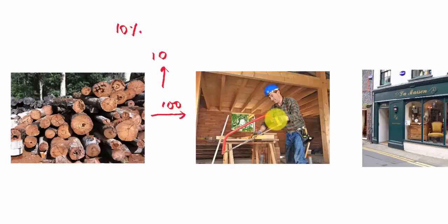This carpenter adds the value to the log by converting it into furniture, chair or sofa, and sells them to the furniture company in rupees 200. So the tax will be rupees 20 at the rate of 10 percent, but the input cost in rupees 200 is rupees 100. So value addition is only rupees 100. Therefore tax will be only on rupees 100 and not 200.